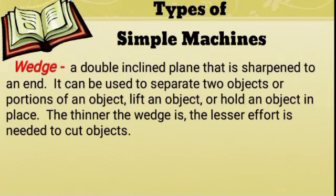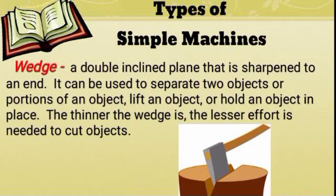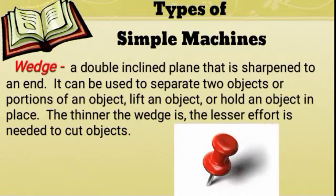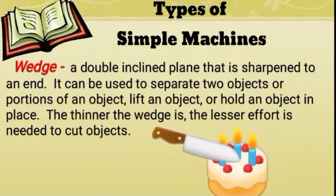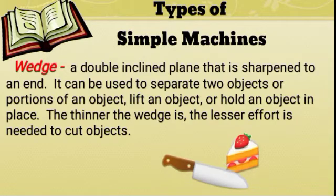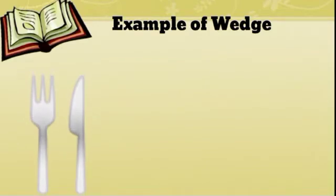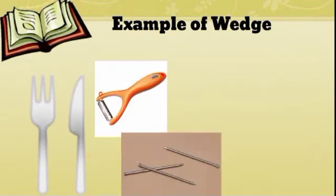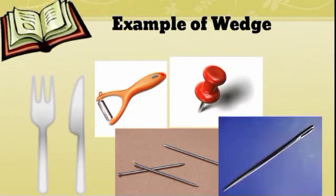Wedge is a double inclined plane that is sharpened to an end. It can be used to separate two objects or portions of an object, lift an object, or hold an object in place. The thinner the wedge, the lesser effort is needed to cut objects. Here are examples of wedge: fork, knife, pillar, nail, pin, and needle.